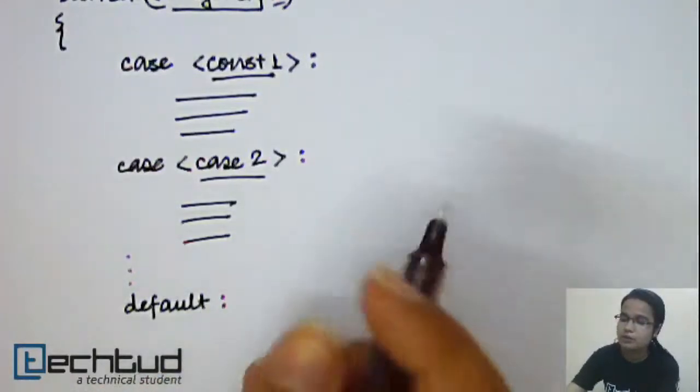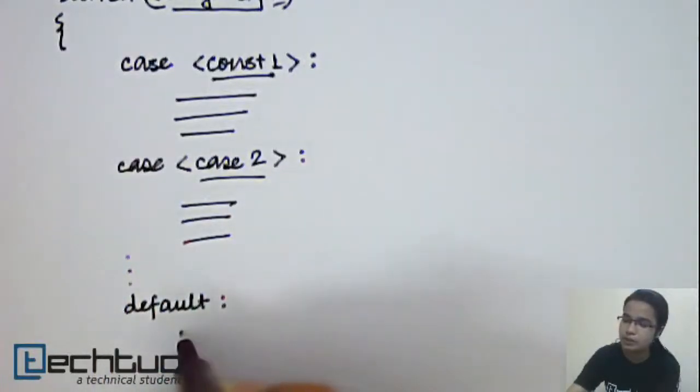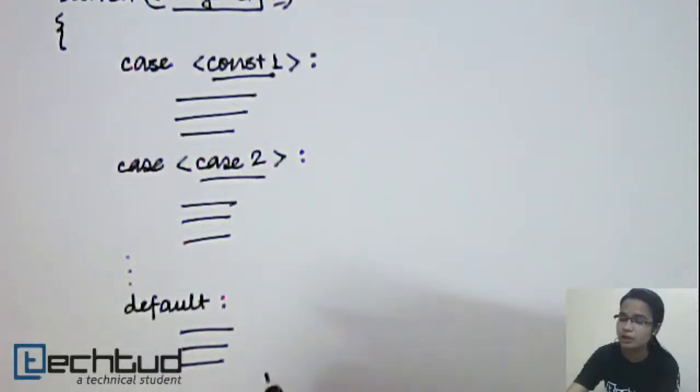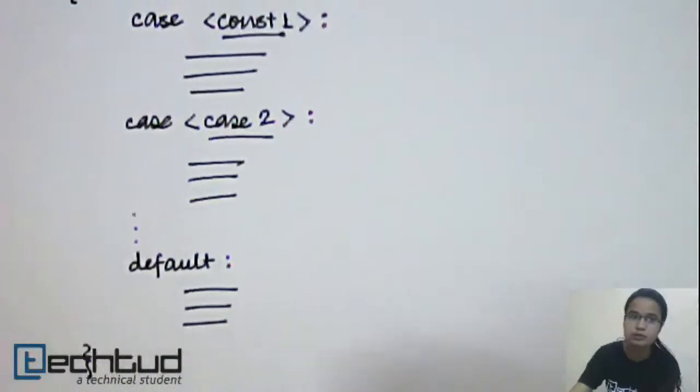But the default statement is, if none of these values are satisfied, then the control will come to this default and under this default the statements will be executed. So after the default, you close the braces of your switch case.